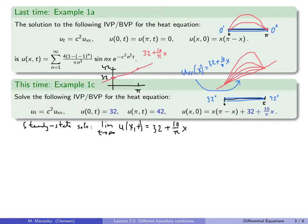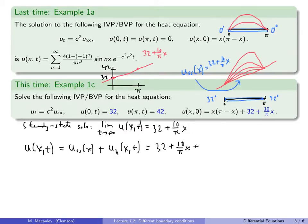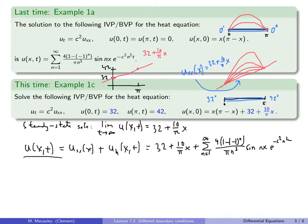Not surprisingly, the general solution for this equation is the steady-state solution plus the homogeneous solution. Putting the steady-state solution first to show it's not inside the sum: u(x,t) = 32 + (10/π)x + sum from n=1 to infinity of 4(1-(-1)^n)/(πn³) · sin(nx) · e^(-c²n²t). This is just the previous solution bumped up by the line 32 + (10/π)x.